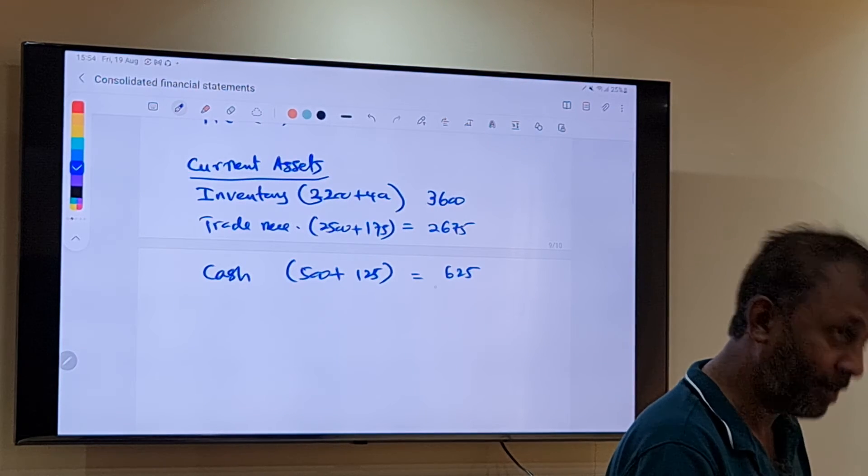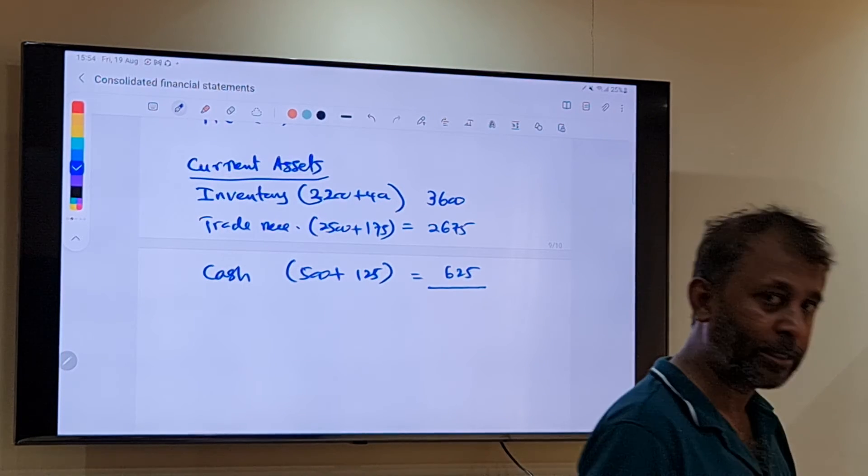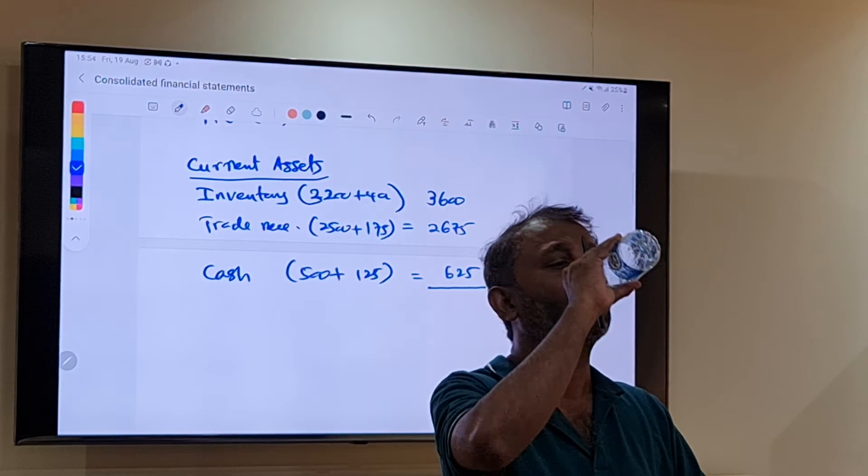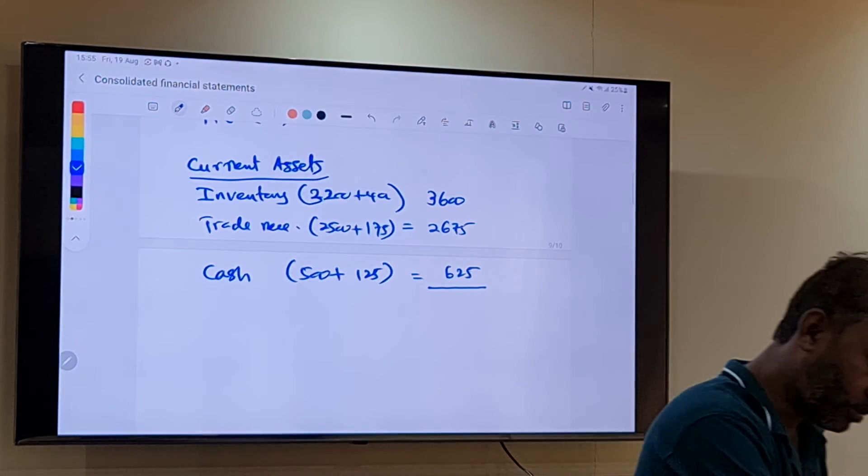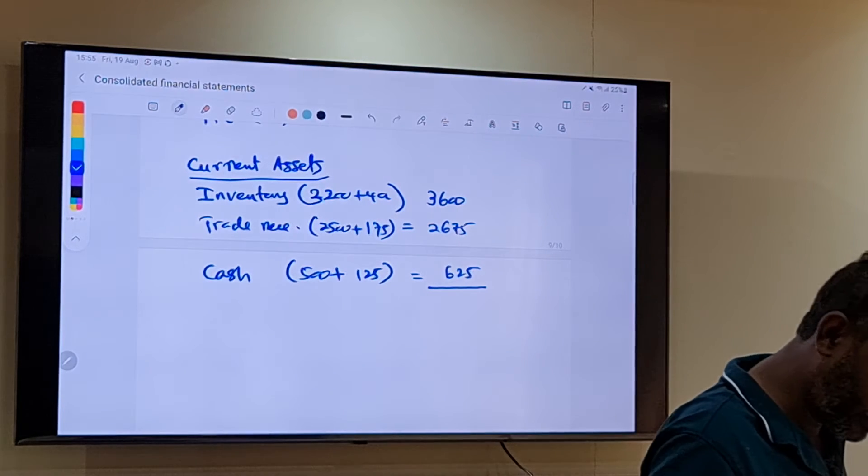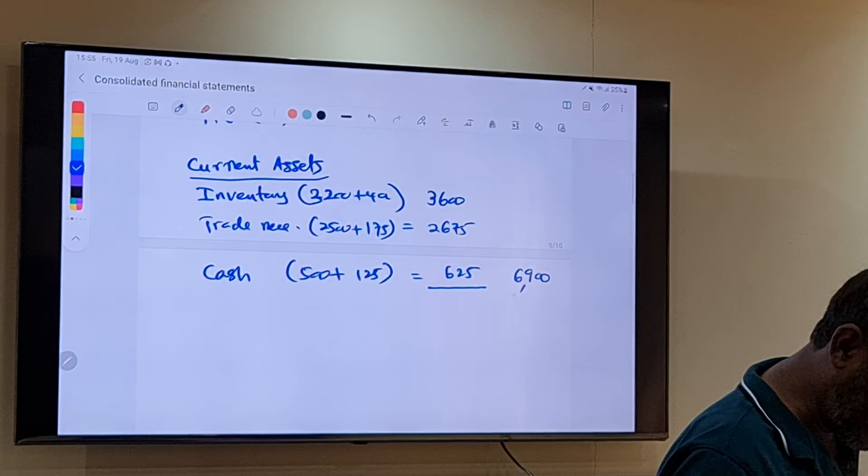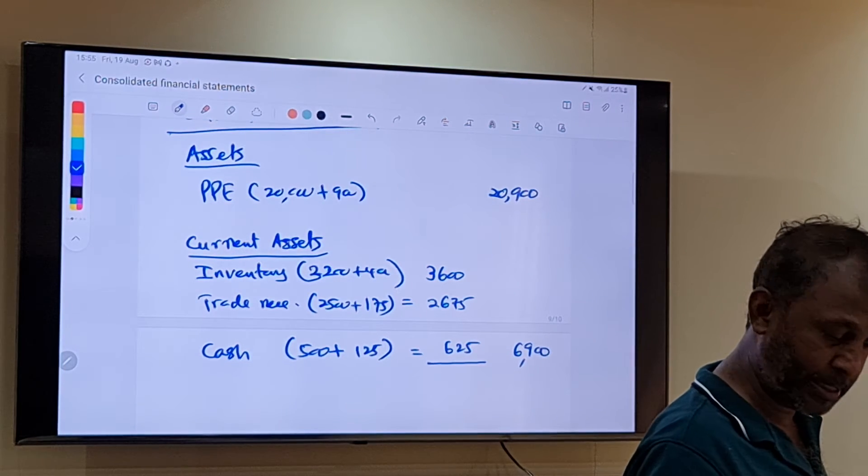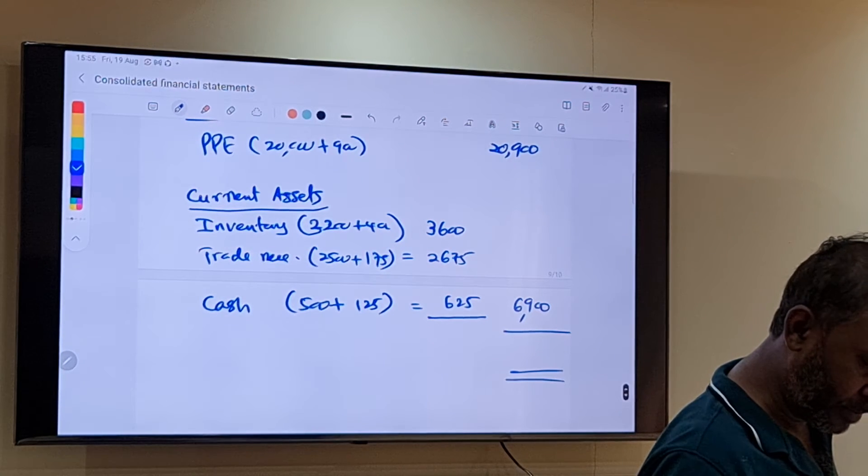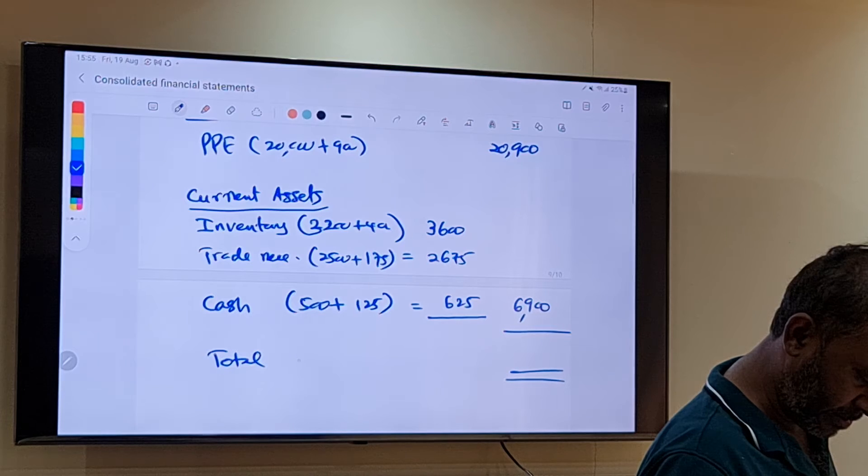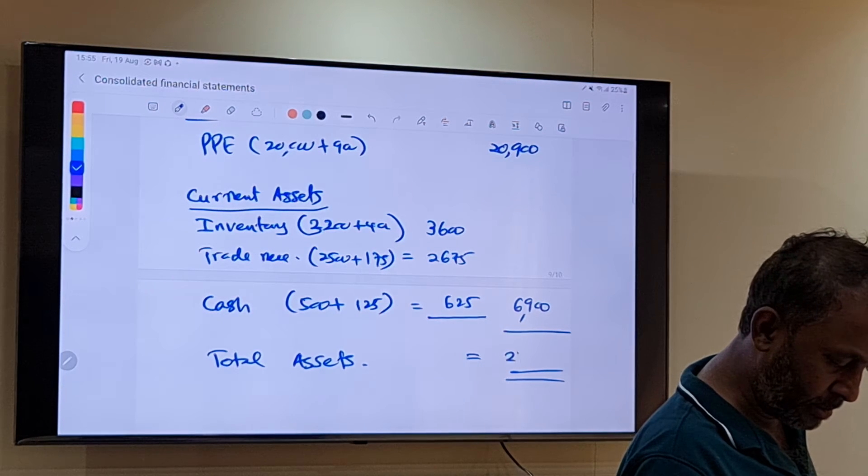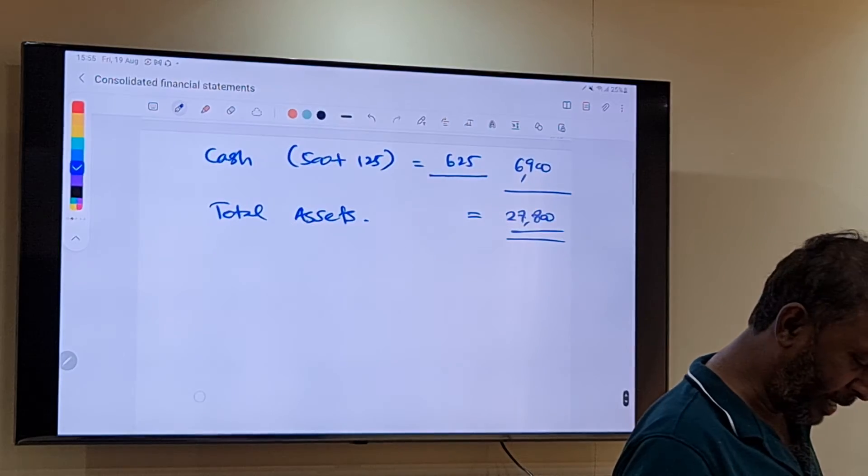Is this balance sheet? Yeah, this is the consolidated balance sheet we are doing. How much is the total? We need to take the total of the non-current asset and the current asset. Total assets: 27,800.